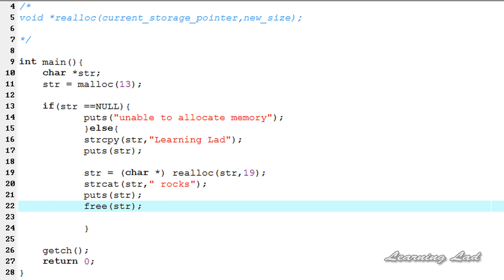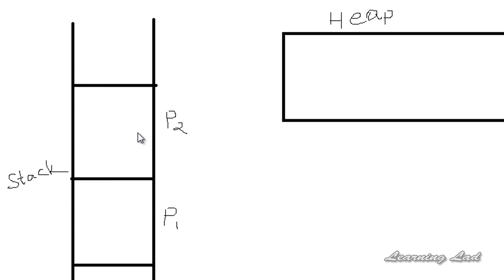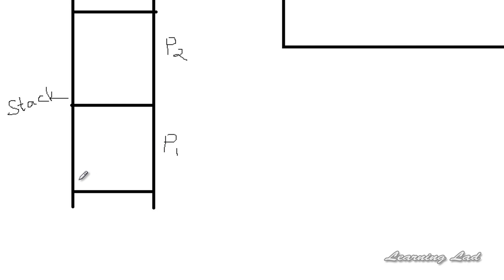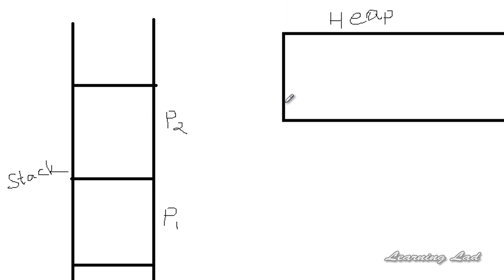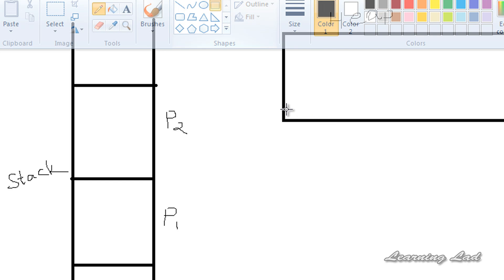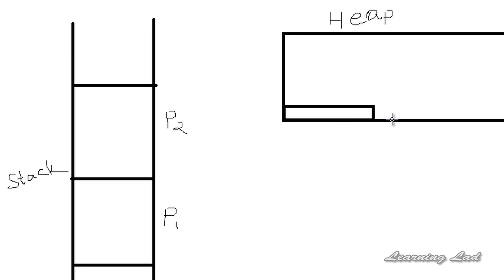Before running the program, let me draw a diagram. This is the stack space provided by the operating system for programs to store local values, and this is the heap. Program one and program two are the currently running programs — let's assume ours is program one. When we use the malloc function and allocate 13 bytes of memory, the memory is allocated in the heap — 13 bytes — and we store the string "Learning Lad" there.